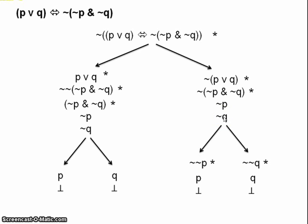Okay, then. That means that our whole tree here is closed. We've derived a contradiction on every branch. So our original argument, before we applied the negation to it, our original argument up here is valid.